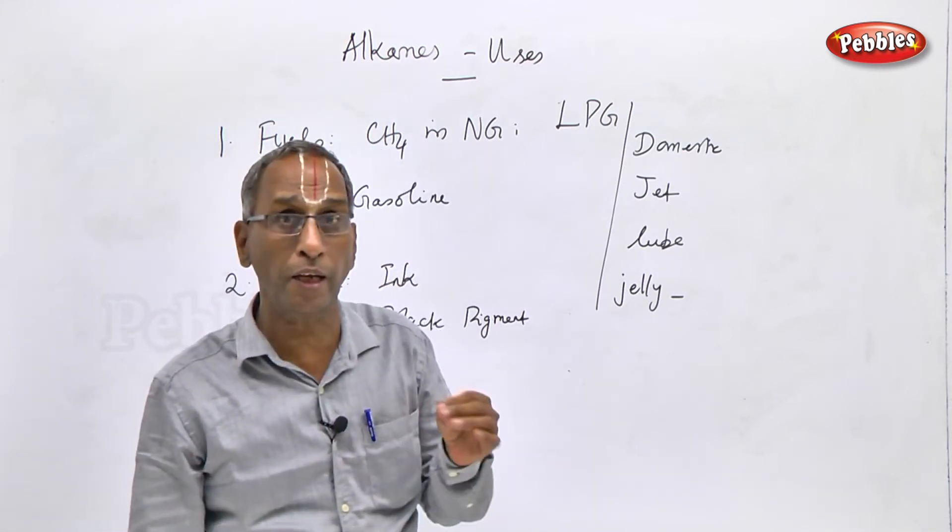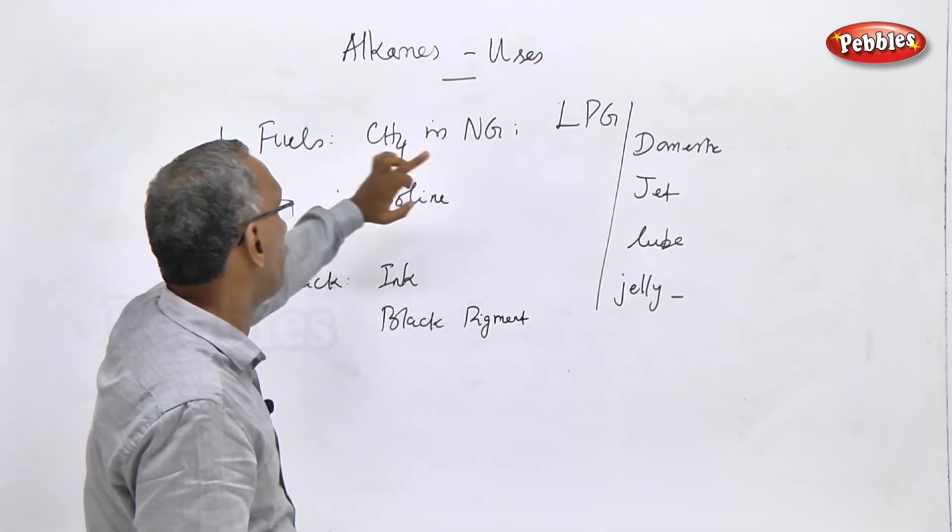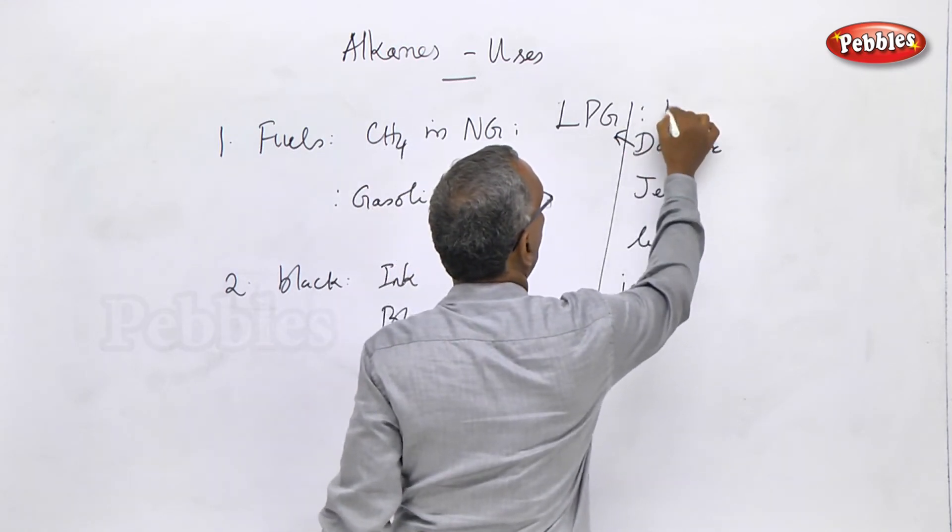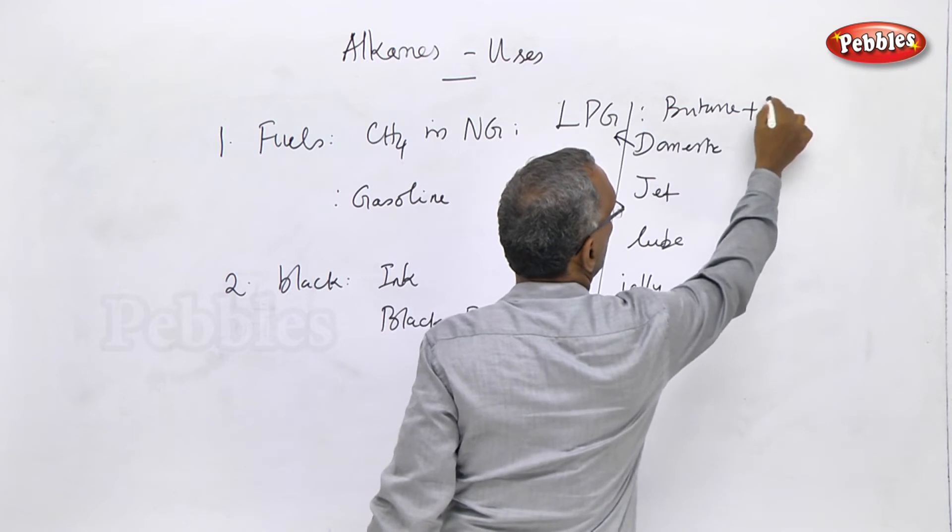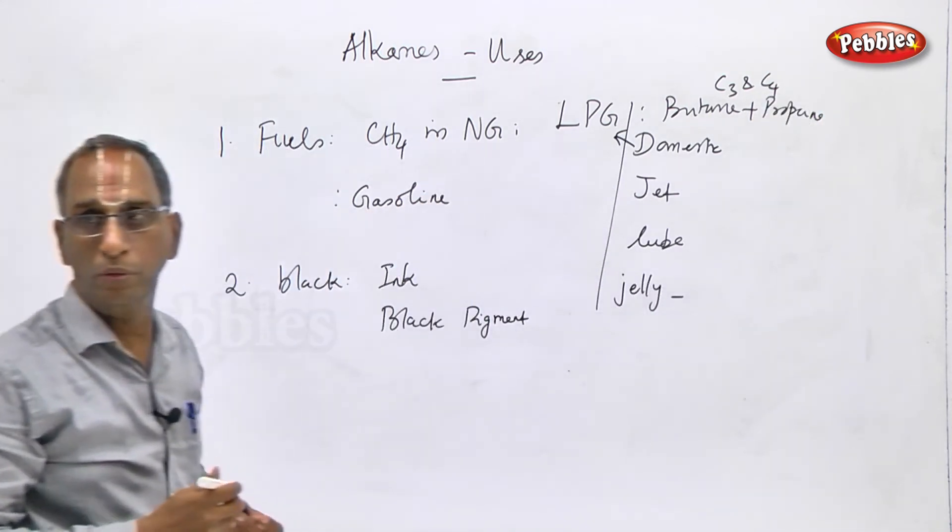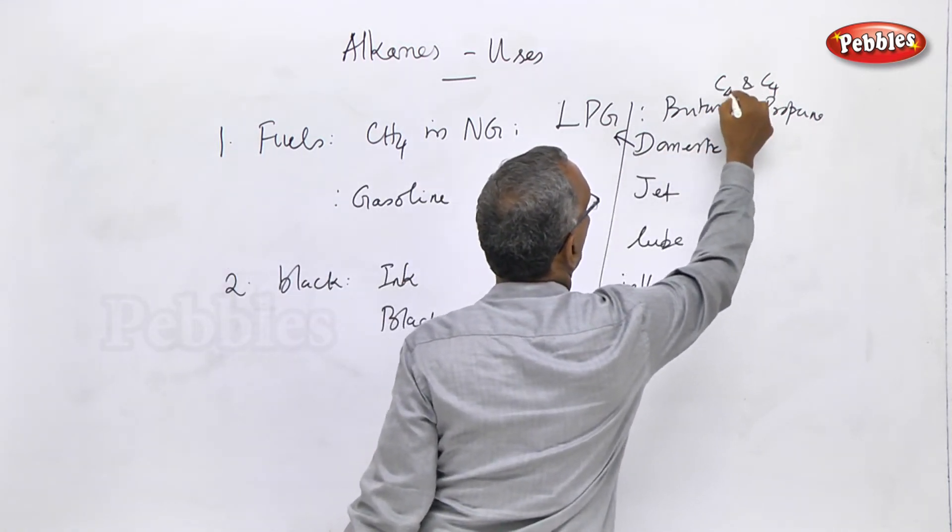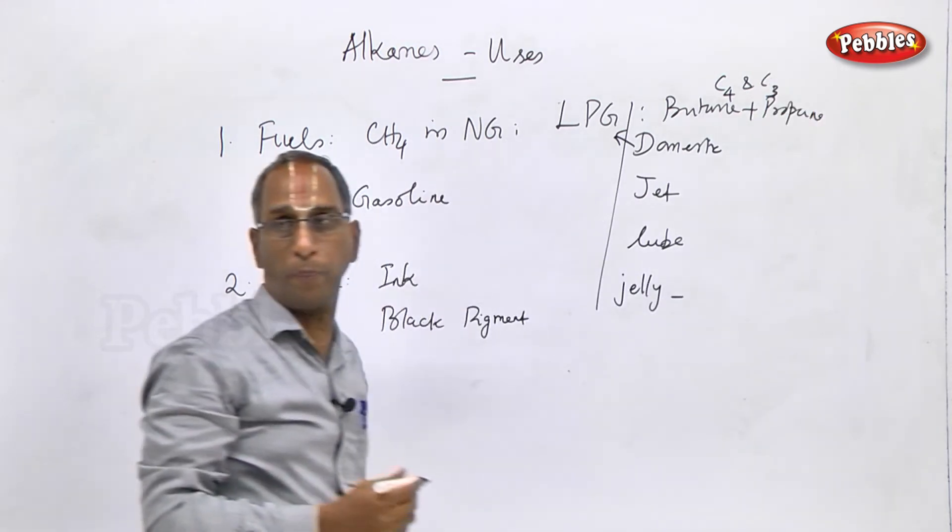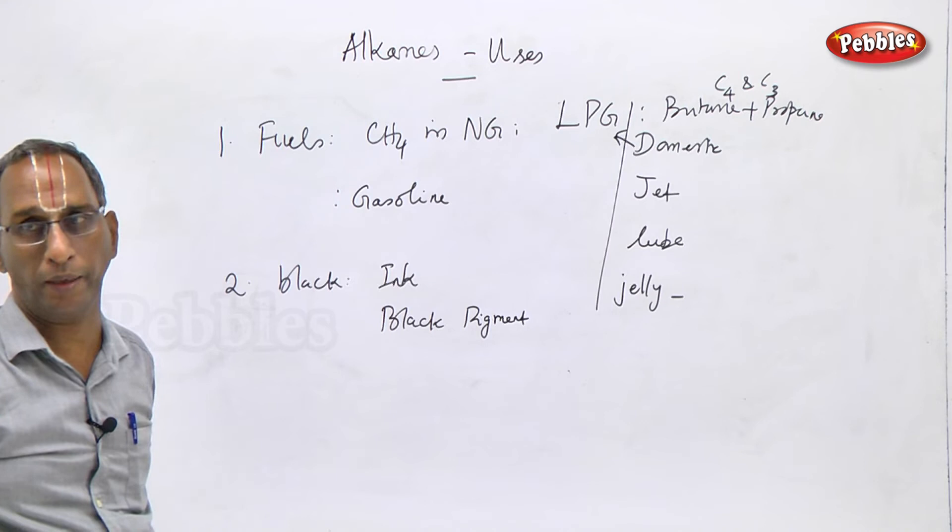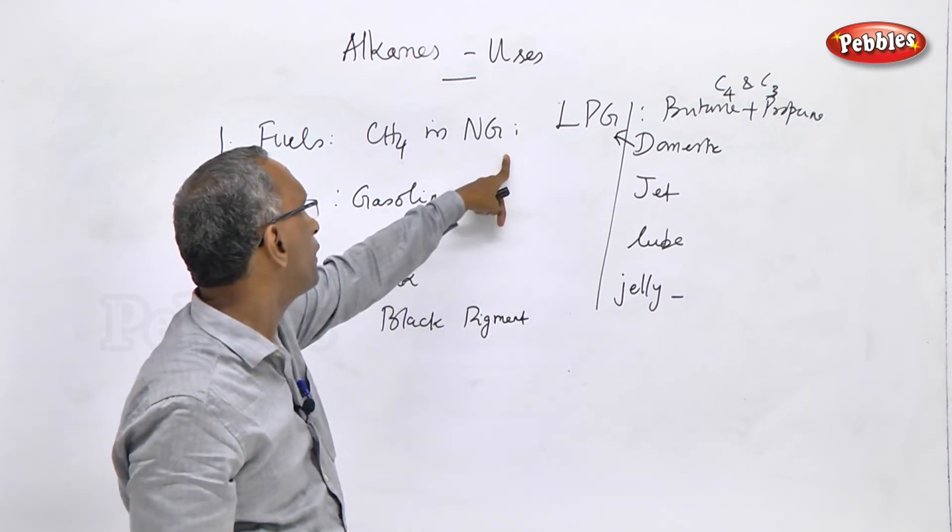There are three important types of fuel applications. First is domestic fuel. Domestic fuel means LPG - liquefied petroleum gas. LPG is a mixture of butane and propane. Generally, it is a mixture of C3 and C4 hydrocarbons - propane C3 and butane C4. The LPG gas we use is a mixture of butane and propane, used as domestic fuel.